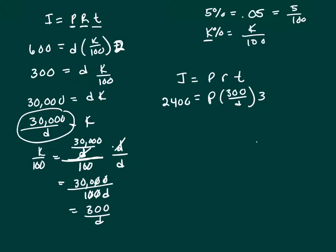I'm going to multiply both sides by D to clear my fractions. That's 2,400D equals P times 300 times 3. I'm going to divide both sides by 3, and that's the principle.